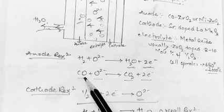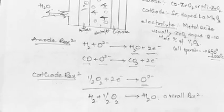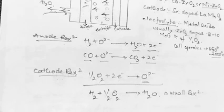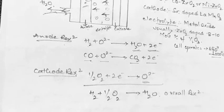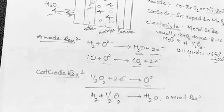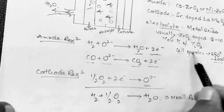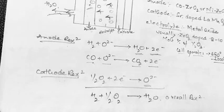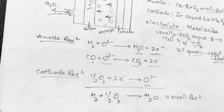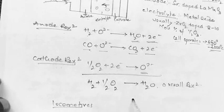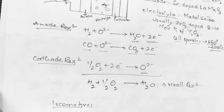The solid oxide fuel cell is used in applications where large amounts of heat are required. One important point: this cell operates at 650 to 1000 degrees Celsius. Please practice this topic. If you want me to explain again, let me know and I will post additional videos accordingly. Thank you.